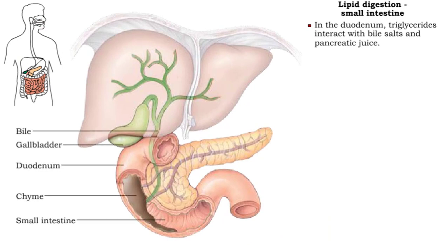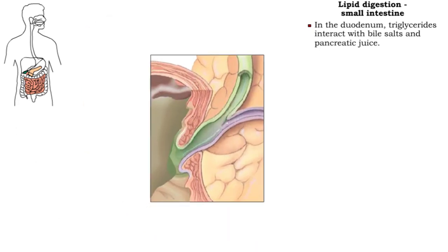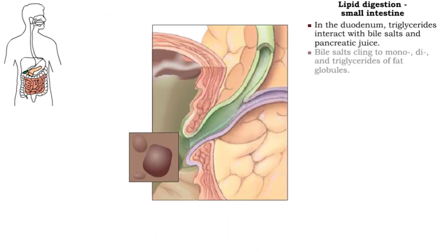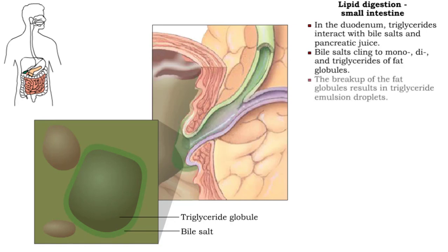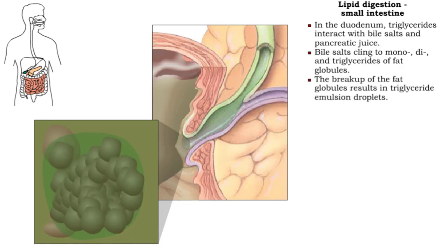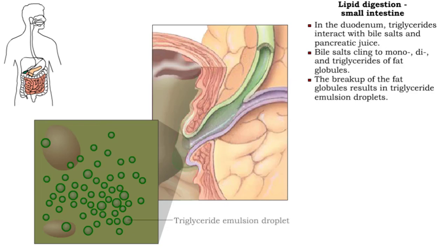As chyme enters the duodenum from the stomach, it is met by bile salts and pancreatic juice. Bile salts cling to the mono-, di-, and triglycerides of fat globules, causing the fat globules to break up into triglyceride emulsion droplets.